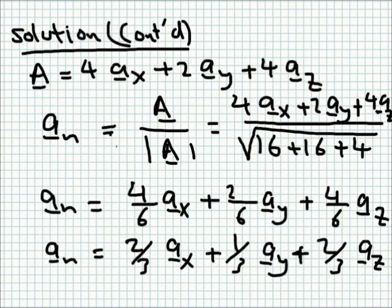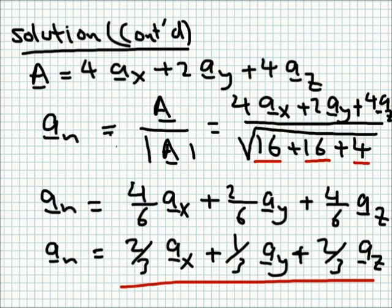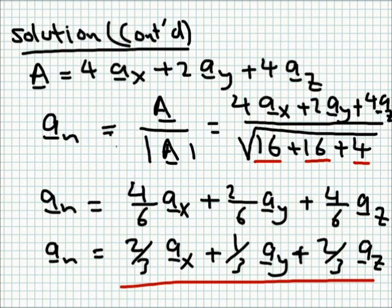We compute the magnitude as the square root of 4² + 2² + 4² = sqrt(16 + 4 + 16) = sqrt(36) = 6. So we divide every component by 6. Simplifying, the unit normal An = (2/3)Ax + (1/3)Ay + (2/3)Az. We use this very often in electromagnetics — we determine the normal to a surface and compute the dot product between some vector and that unit normal. The normal direction is simply given by the coefficients multiplying x, y, and z in the plane equation, divided by the magnitude.